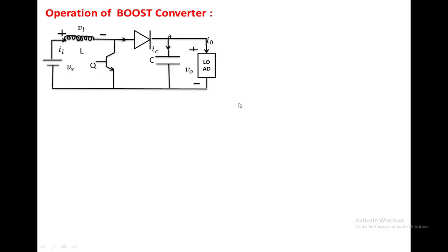In this class we are going to discuss the operation of the boost converter. A boost converter is a DC-to-DC converter in which the output voltage will be greater than the input voltage. This is achieved only because of the inductor present in the circuit. Now we are going to see the circuit diagram.